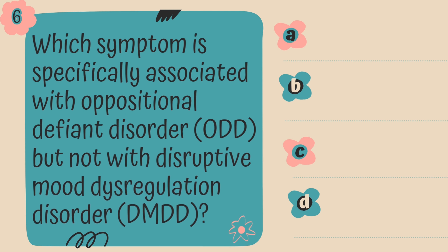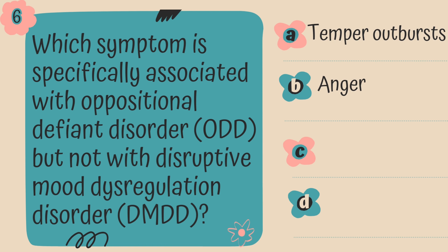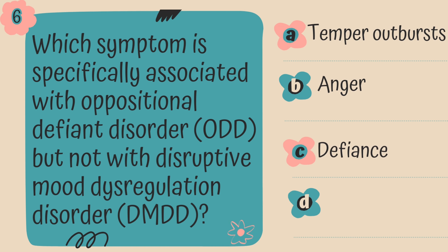Question 6. Which symptom is specifically associated with oppositional defiant disorder but not disruptive mood dysregulation disorder? Is it A. Temper outbursts, B. Anger, C. Defiance, or D. Irritability?